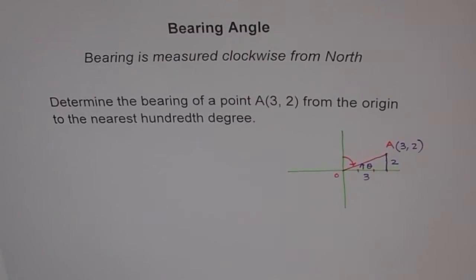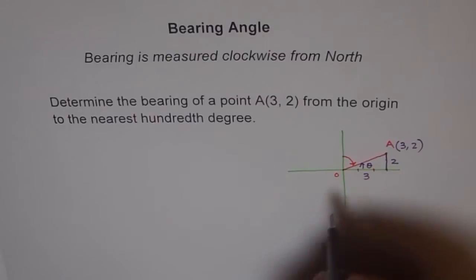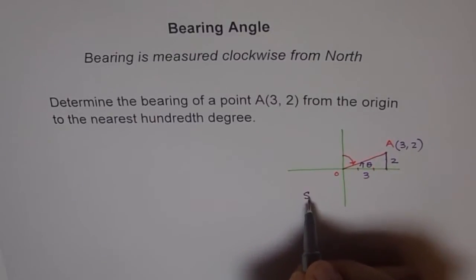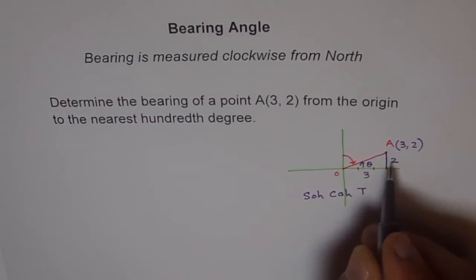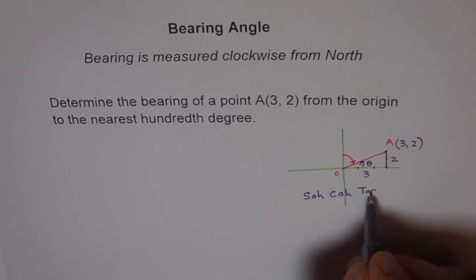So how can we do it? Very simple. You remember SOHCAHTOA? So sine is opposite over hypotenuse and cosine is adjacent over hypotenuse. How about tan? Tan is opposite over adjacent. Now here we are given these two sides so we should use tan.